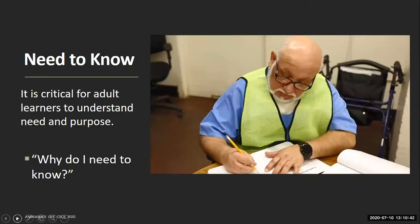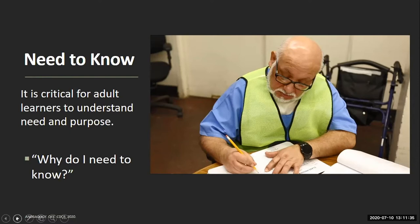We're going to start with the first core principle of need to know. Adults are relevancy oriented — adults like to be able to see how learning connects to their work and to their life. As teachers, when we become familiar with our programs, whether it's a vocational program like woodworking or an academic program like adult basic education, we can facilitate the appropriate connections for them. Teachers also want to demonstrate how the theory and content of the class relates to the participants' lives — really answering that why.